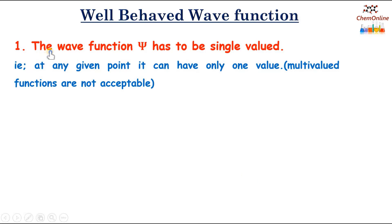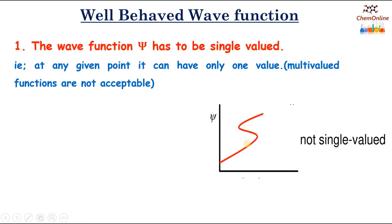The first condition is that the wave function ψ has to be single-valued — that is, at any given point it can have only one value. Multi-valued functions are not acceptable. This is a graphical representation of a multi-valued function.